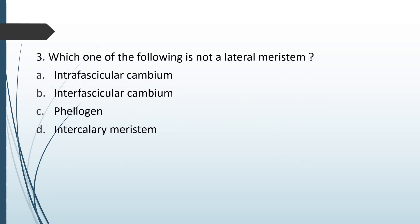Which one of the following is not a lateral meristem? Interfascicular cambium, fascicular cambium, phallogen, intercalary meristem. The correct answer is option D — intercalary meristem.